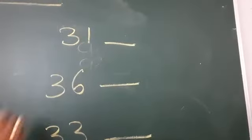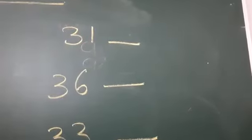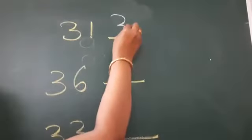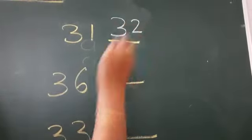3, 1, 31. Which number comes after 31? 3, 2, 32.